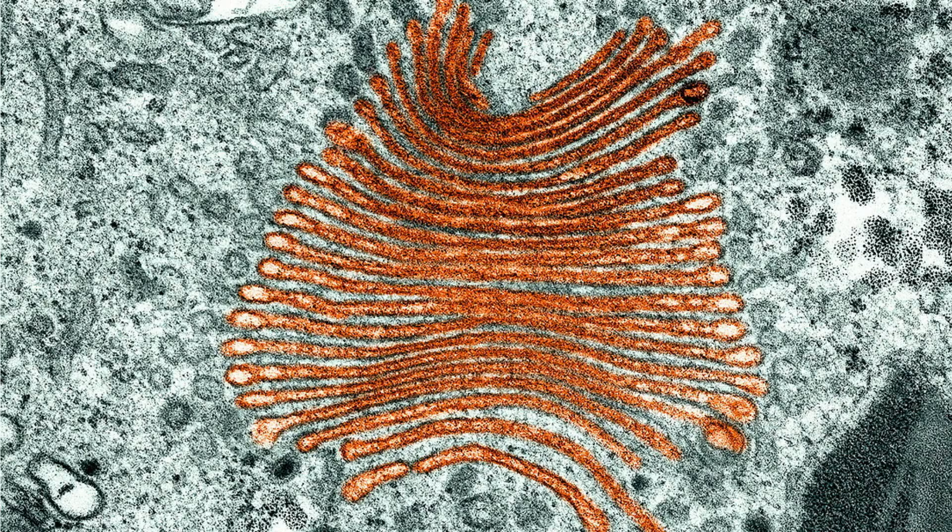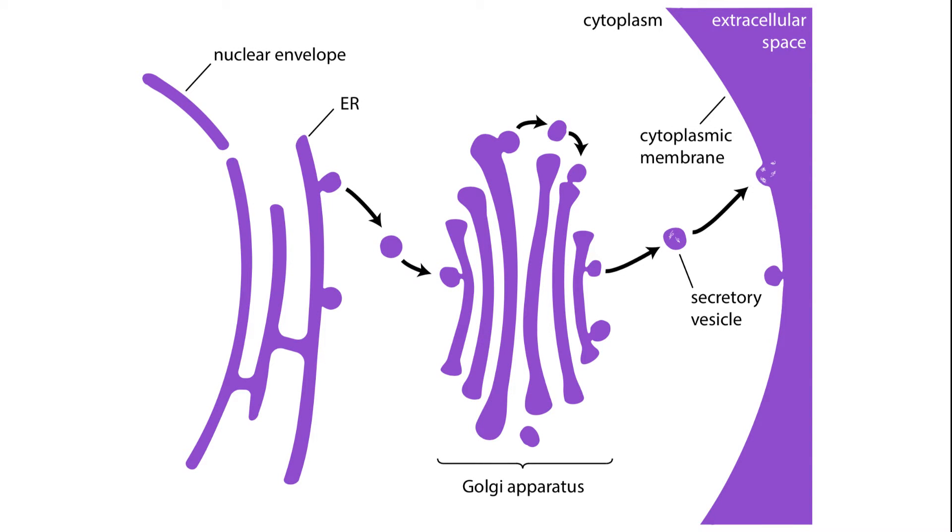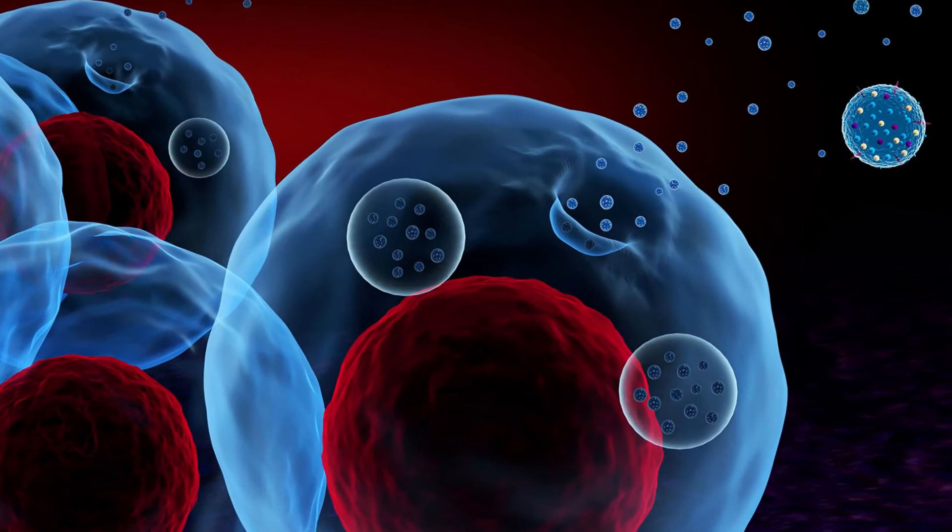Secretory pathway. The Golgi apparatus is a key component of the secretory pathway, facilitating the export of molecules from the cell. Proteins processed and modified within the Golgi apparatus are packaged into vesicles that merge with the cell membrane, allowing for their release into the extracellular space.